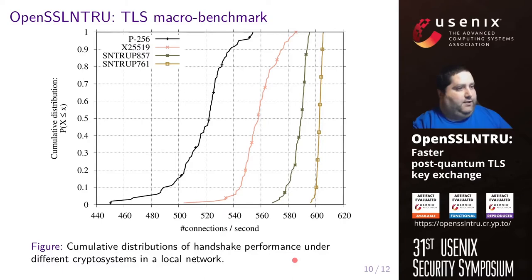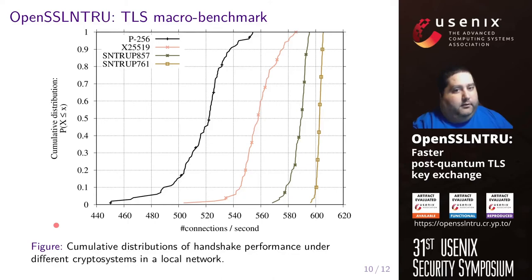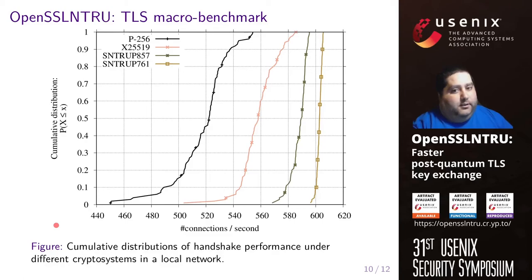This architecture also allows us to run an end-to-end TLS macro benchmark. This picture shows cumulative distributions of handshake performance under different cryptosystems in a local network. The results show that both the recommended SNTRUP 761 parameter set and the higher security SNTRUP 857 consistently achieve more connections per second than the optimized implementations of pre-quantum alternatives currently deployed at large, represented here by X25519 and P256. It is important to remark that one should not conclude from this picture that SNTRUP 761 and SNTRUP 857 cost less than ECC overall. The unloaded high-bandwidth network of our experimental environment masks the higher communication cost of the lattice cryptosystems.